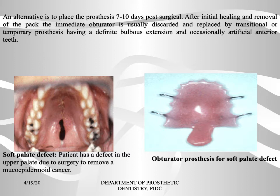After initial healing and removal of the pack, the immediate obturator is usually discarded and replaced by a transitional or temporary prosthesis with a definite bulbous extension and occasionally artificial anterior teeth. The picture on the left shows a patient with a soft palate defect in the upper palate due to surgery to remove a mucoepidermoid cancer, and on the right is an interim prosthesis for the soft palate defect.